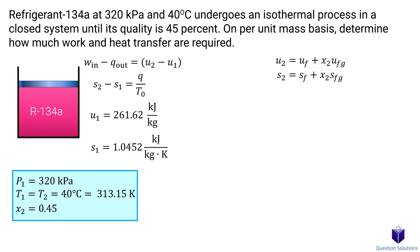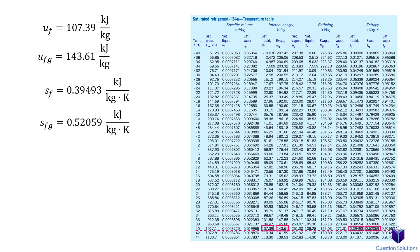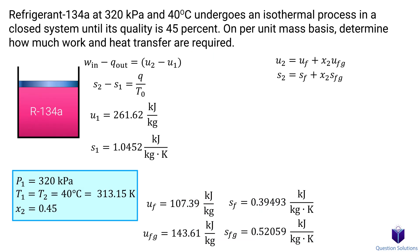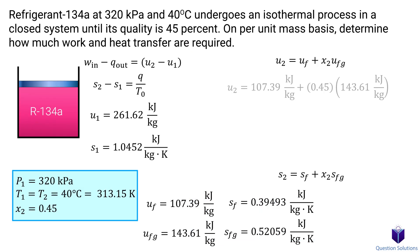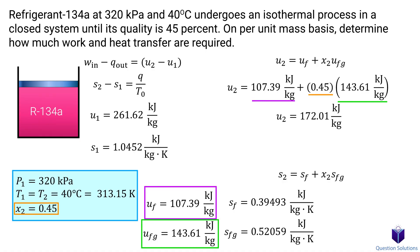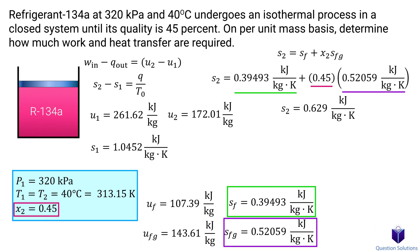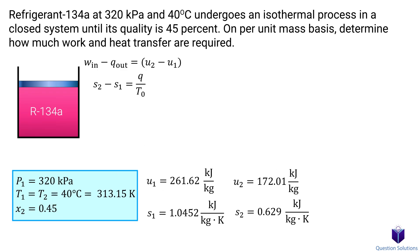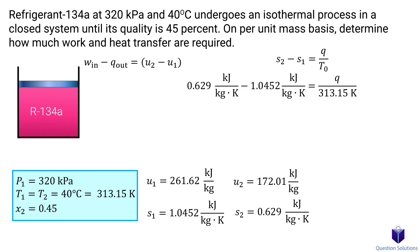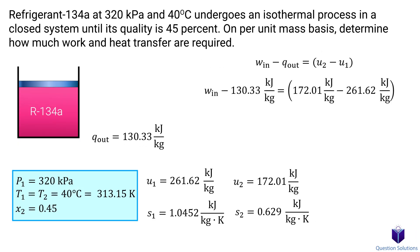Let's open up our property table and look for 40°C — here are the values we're looking for. Now we plug them in. Solving gives us the internal energy at the second state. Now we plug values into our entropy equation and get the entropy at the second state. With all values in hand, we compute heat transfer first — solving gives us a negative value, meaning heat is transferred from the system, so this is heat output. Now we go back to the energy balance equation, plug our values in, and solve for work input — and that's our answer.